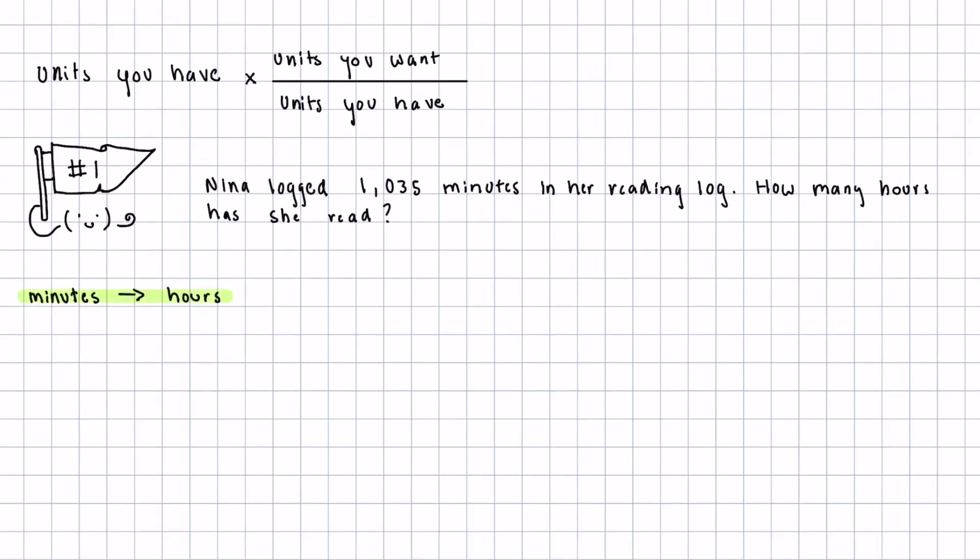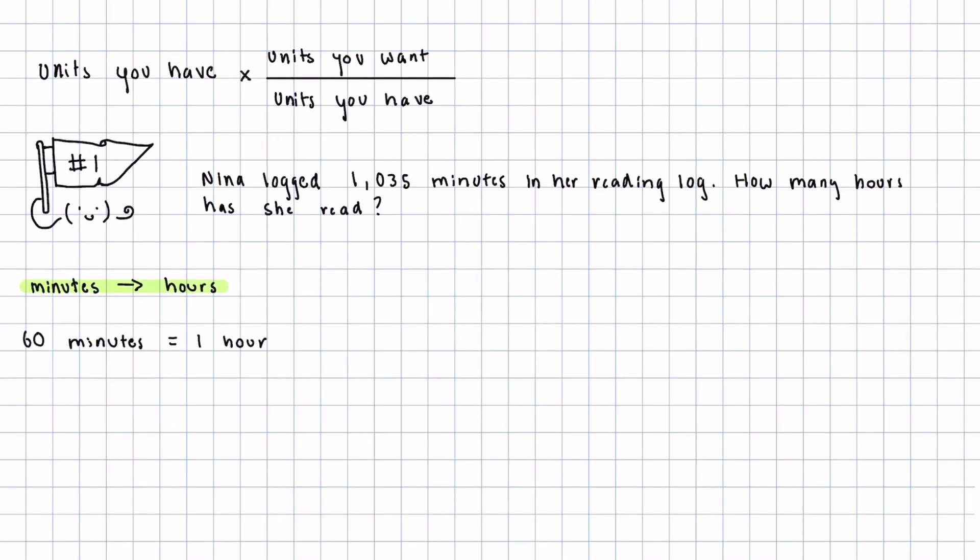So we know that we want to go from minutes to hours, but can we come up with a conversion ratio that can help us solve this problem? And if you were thinking that the conversion ratio would be 60 minutes equals an hour, then you'd be correct. Now all we have to do is just put this back into the unit conversion setup.